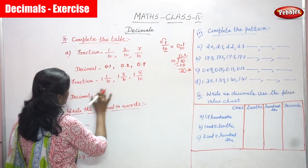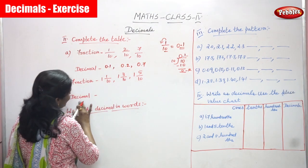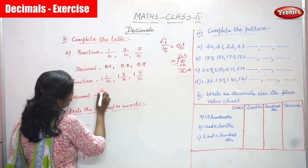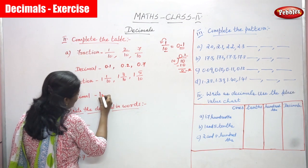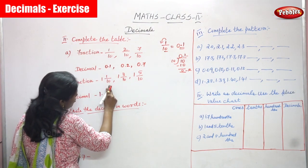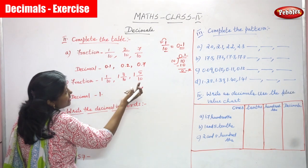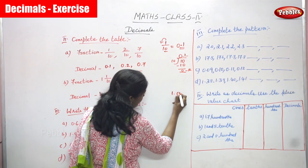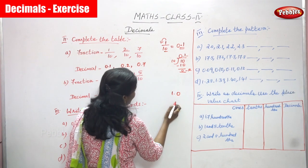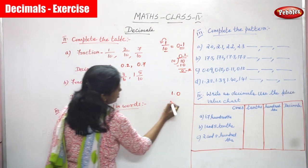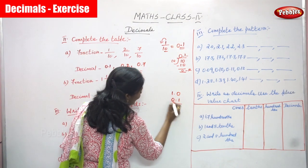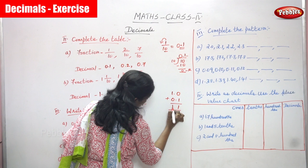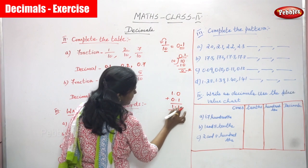Next fraction: 1 is a whole number and 1 by 10 is a proper fraction — it is a mixed fraction. So you have to write 1 as it is, then put a point. 1 by 10 means 0.1. So you write 1, put a point, and 1 by 10 gives 0.1. Adding 1.0 plus 0.1: 0 plus 1 is 1, and 1 plus 0 is 1. Put a point. So the answer is 1.1.